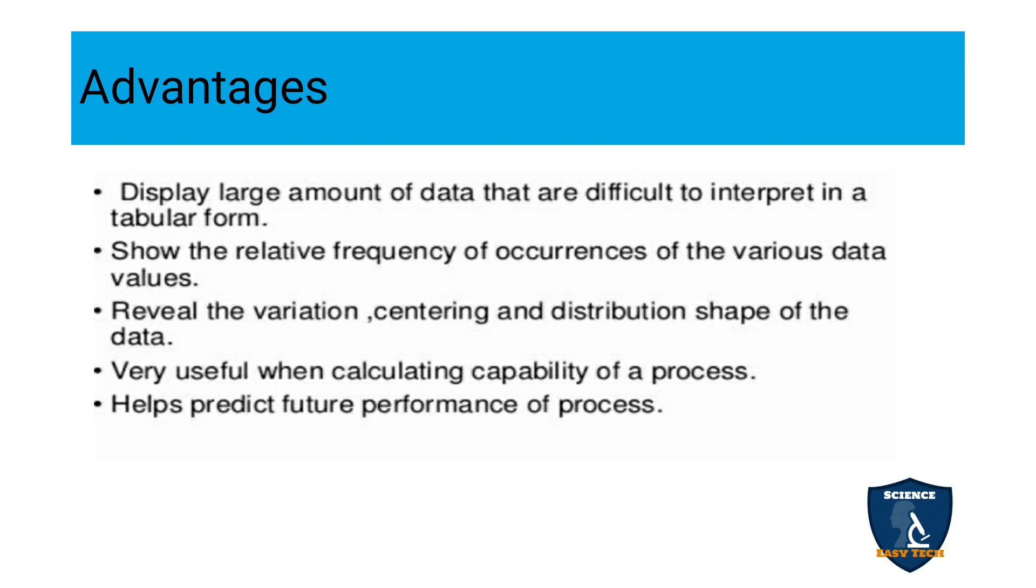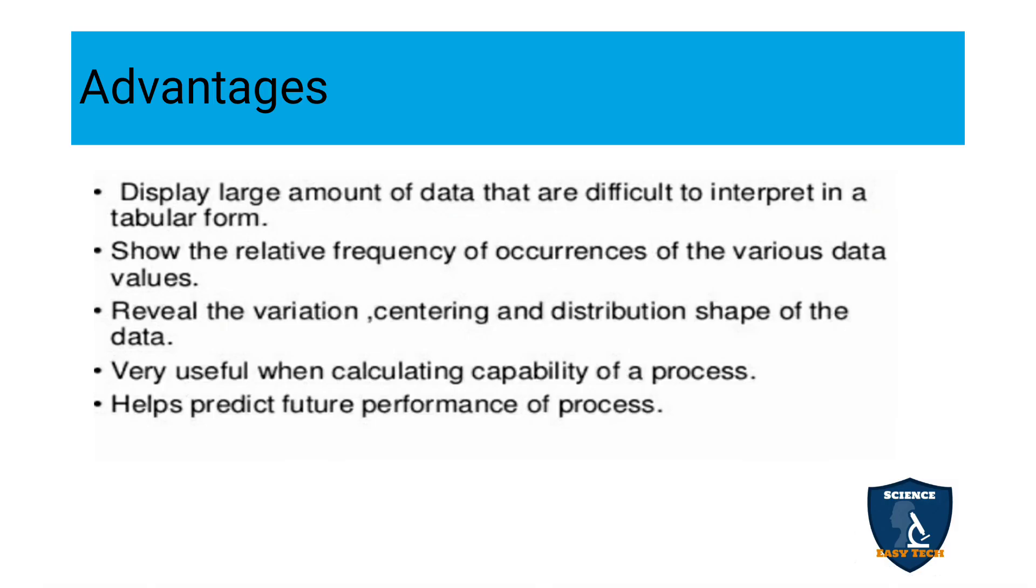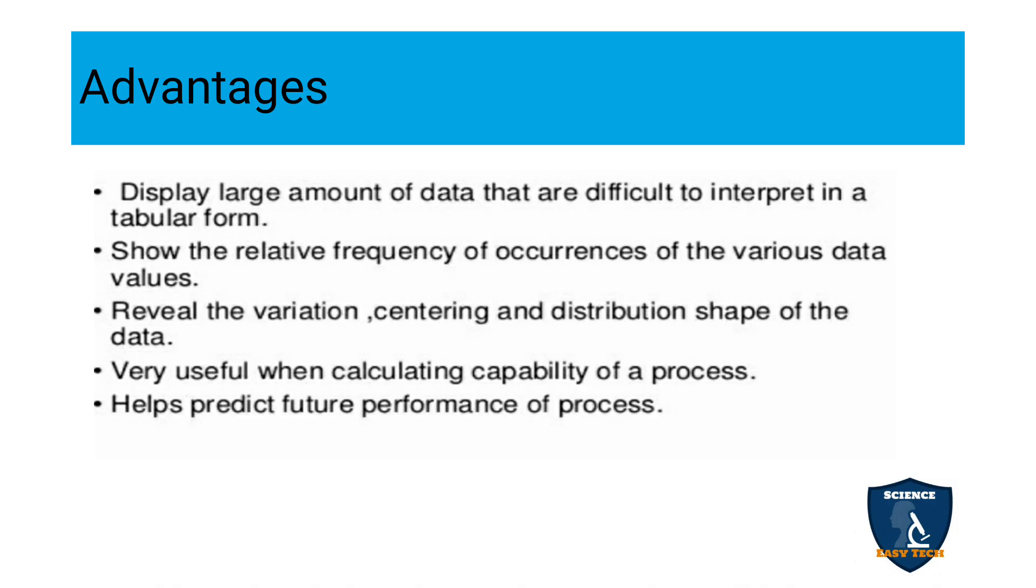What are the advantages of histogram? It displays large amount of data that are difficult to interpret in tabular form. By seeing this itself, you will be knowing easily you can tell how many males are there in the age group of 10 to 15 years. Large amount of data can be interpreted in graphical form. It shows the relative frequency of occurrences of the various data values. Here 20 to 25 years, it is represented in green color. How many members are there? 30 members are there. By seeing it itself, you can tell how much frequency you can identify it. Next, reveal the variation, centering and distribution shape of data. You know how the data has been distributed, what variation it is having and where the data has been centered. Everything you can see by means of this graphical representation. Very useful when calculating capability of your process. That you can predict future performance of your process. You can assess the performance of a particular thing. That based on the performance, you can predict the future of that particular innovation or process what you have introduced.